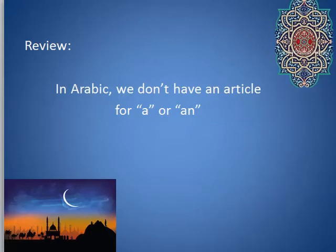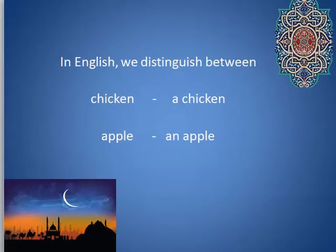As you know, in English we don't have an article for 'a' or 'an' — we just say 'kitab' is a book, 'sayara' is a car, and so forth. As in English, we distinguish between chicken and a chicken. You say 'I like chicken' — that's the generic term. Or 'apple pie' — it has apple in it. You would sound weird if you said 'I like a chicken.' This is what we call a collective noun — it refers to the whole category.